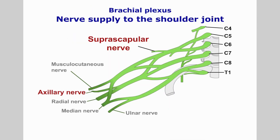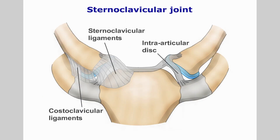It is innervated by the suprascapular nerve. The sternoclavicular joint is also a synovial double plane joint formed between the sternum and the medial aspect of the clavicle. It contains an intraarticular disc and is reinforced by the anterior and posterior sternoclavicular ligaments and the costoclavicular ligament. It is innervated by the supraclavicular nerve and the nerve to subclavius.